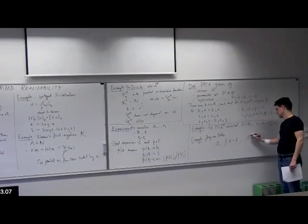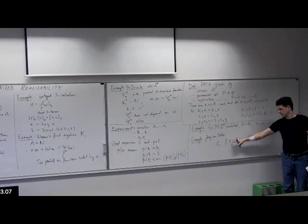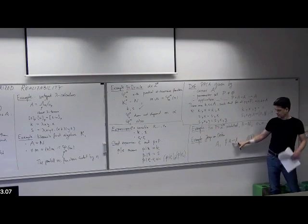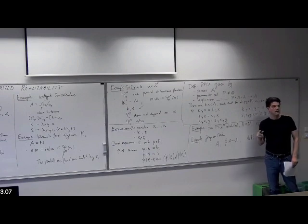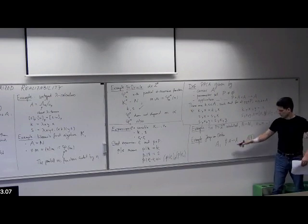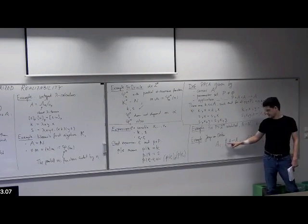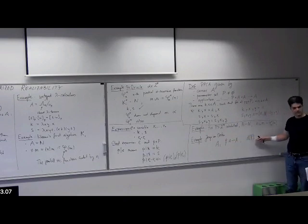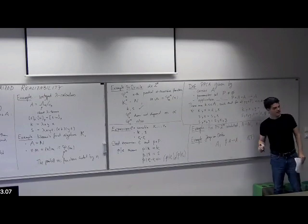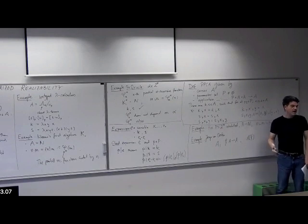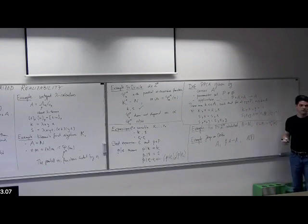His construction is parametric, which means we can take any PCA, any set of partial maps from A to A, and we will get a parameterized PCA using the construction. You use the same elements but change the application so that applying one element to another encodes a kind of dialogue between the PCA and the oracle — you construct lists which record how a dialogue between the PCA and the oracle might have gone to get a result. It's a nice construction.